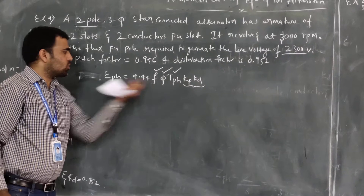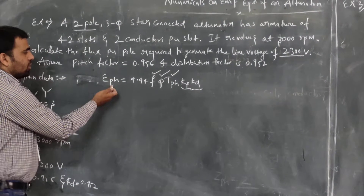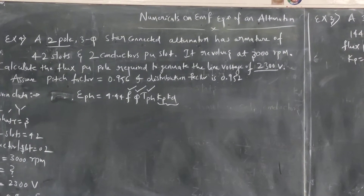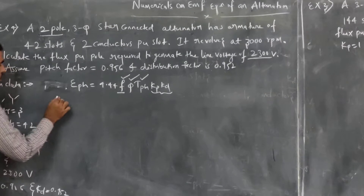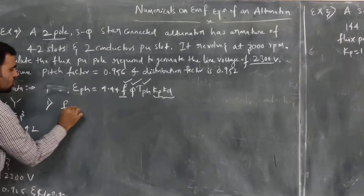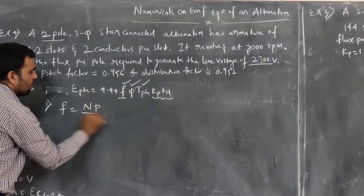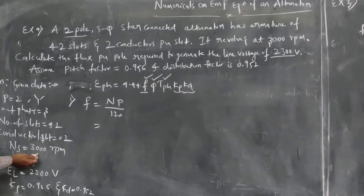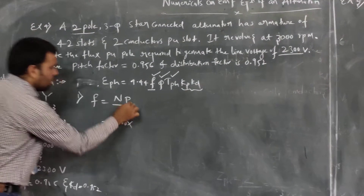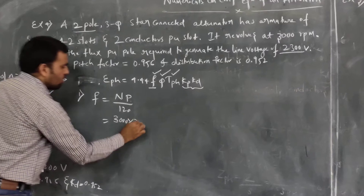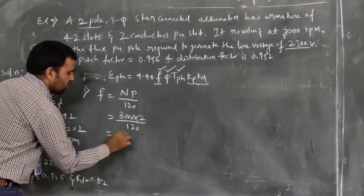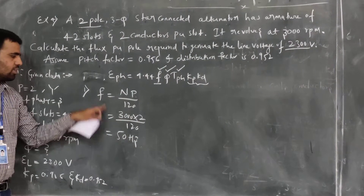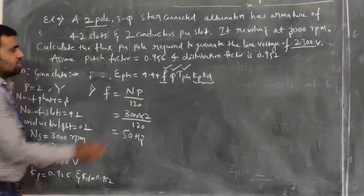So we have three parameters to calculate. For EPH, since it is star-connected, EPH = EL / √3, and EL is given. First I will calculate the frequency. We know that F = N × P / 120. So N = 3000 rpm, P = 2, divided by 120, we get F = 50 Hz. So the frequency of the alternator is 50 Hz.